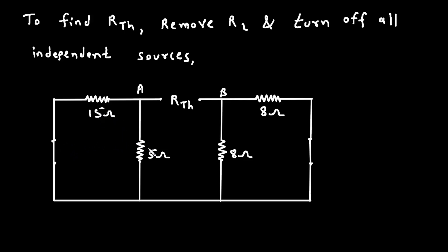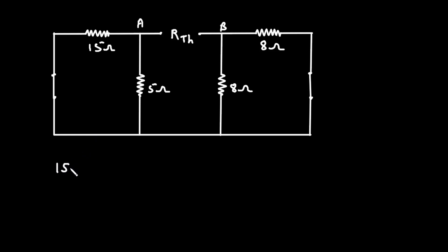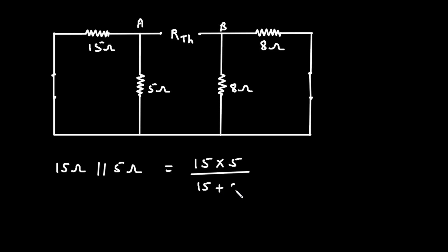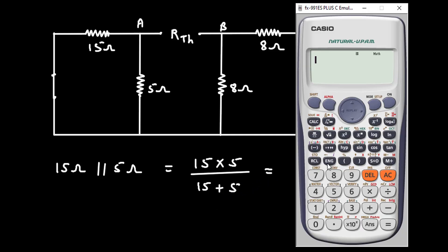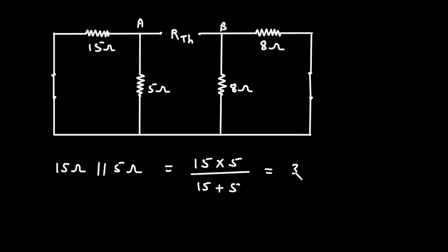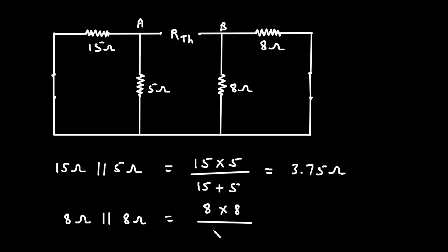Now, we can see this 15 ohm and 5 ohm are connected in parallel. So we can write 15 ohm parallel with 5 ohm. If we solve this, we get 15 × 5 divided by 15 + 5, which equals 3.75 ohm. Also, this 8 ohm and 8 ohm are connected in parallel: 8 × 8 divided by 8 + 8 gives us 4 ohm.